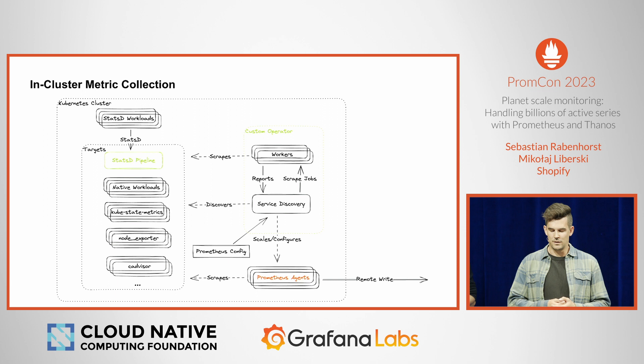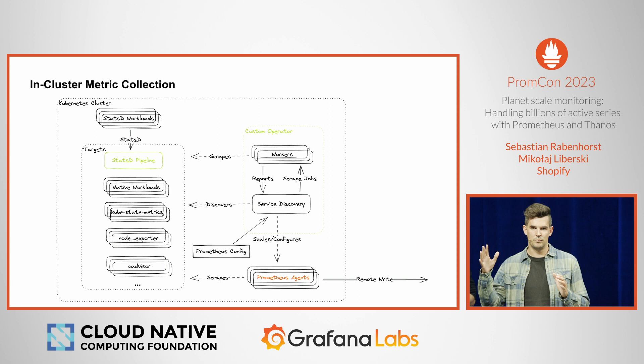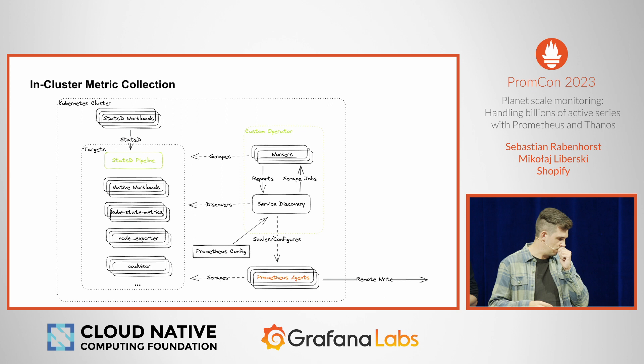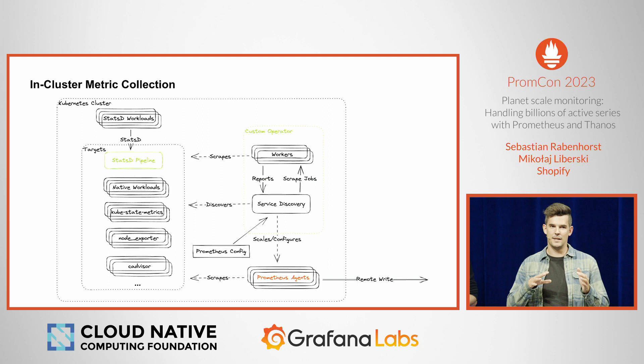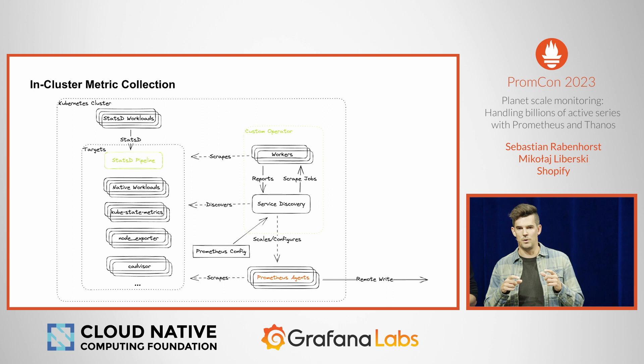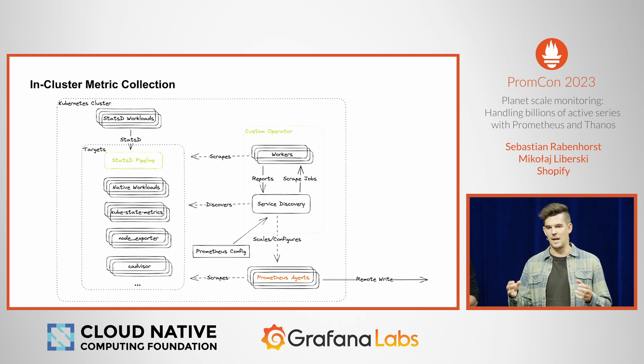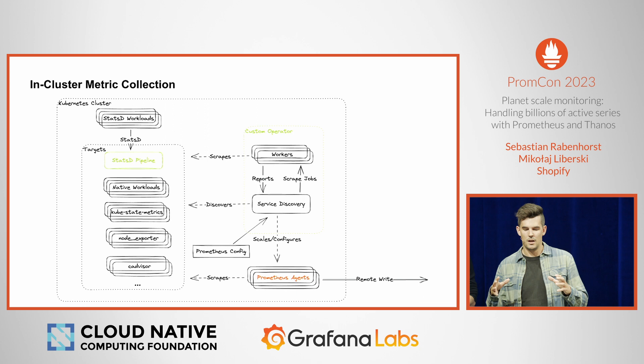So what we did is implement a custom operator. It works as follows: we have the service discovery part from Prometheus — it gets a standard Prometheus config, discovers all the targets in the cluster, and then writes those targets into a queue where workers take those targets, scrape them once, create a report, and the most important information in the report is just the target size. It puts that back and sends it to service discovery, and then service discovery scales the Prometheus agents accordingly and creates configuration for them so that the distribution of load over the Prometheus agents is even.